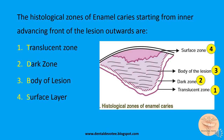The histological zones of enamel caries, starting from the inner advancing front of the lesion outwards, are: translucent zone, dark zone, body of the lesion, and surface layer.